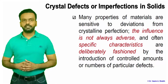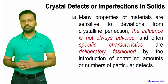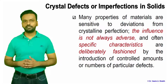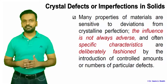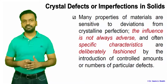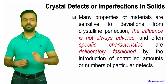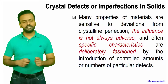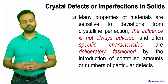Many properties of the material are sensitive to deviation from crystal perfection. The influence is not always adverse, and often specific characteristics are deliberately fashioned by us so that we get a certain type of property. We can put controlled amounts of defects in the material to get certain properties and applications out of it.